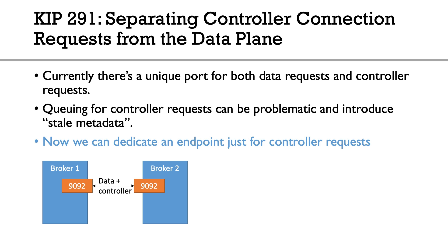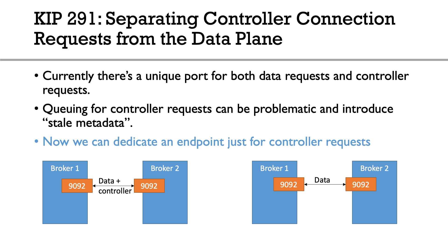So what does it look like? Today we have broker one and broker two, and they both have port 9092 exposed to each other — this is where both data and controller requests go through. But with this change in Kafka 2.2, we keep port 9092 for data requests, and we can now dedicate a new port, say 9091, that is going to be dedicated to controller communication between the brokers. I'm really excited about this because for a high-volume, high-traffic Kafka cluster, this will definitely improve controller request handling and give them higher priority.